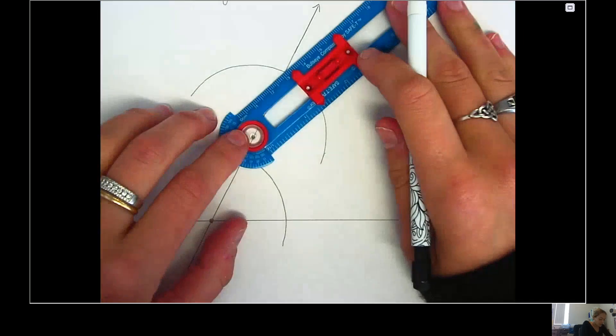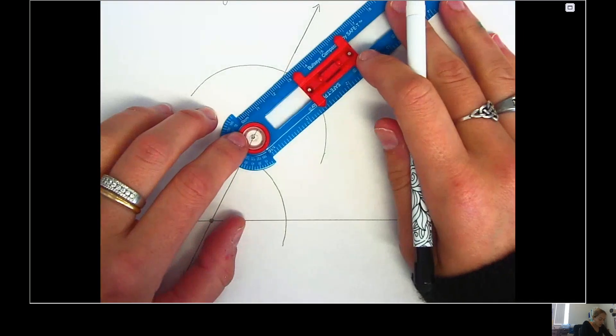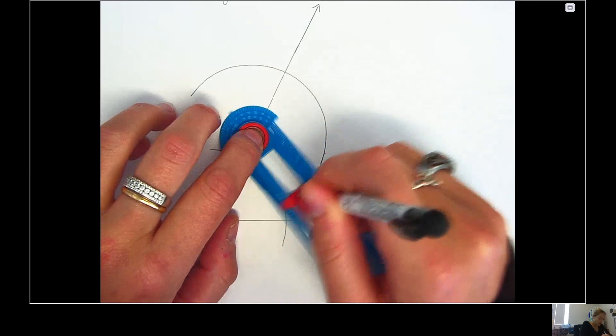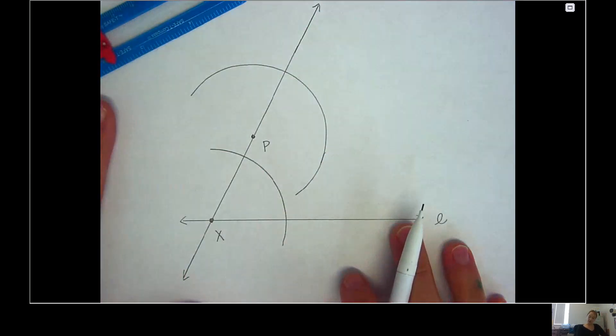Okay, there we go. Make sure I do it. It should be almost half of a circle for our purposes here, something like that, right, almost half of the circle.